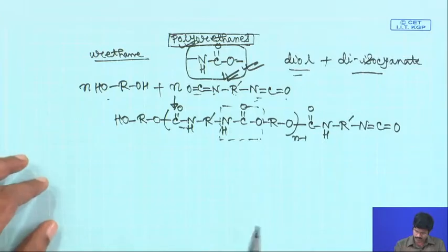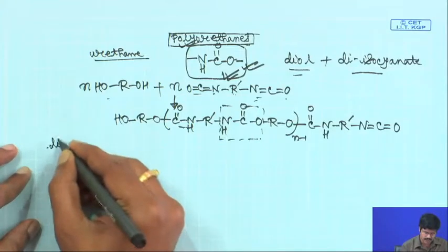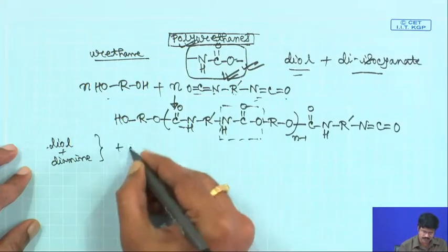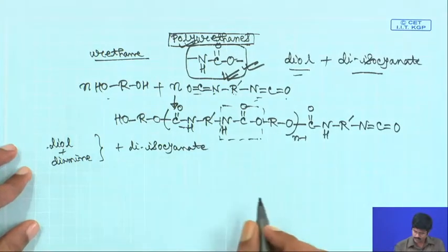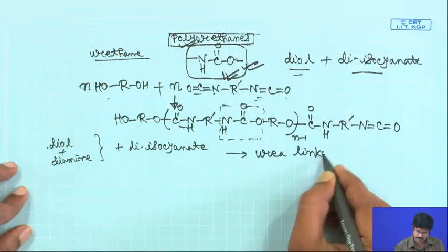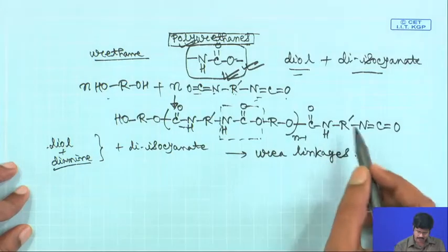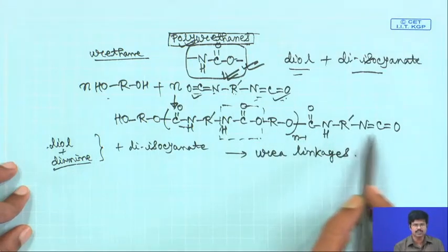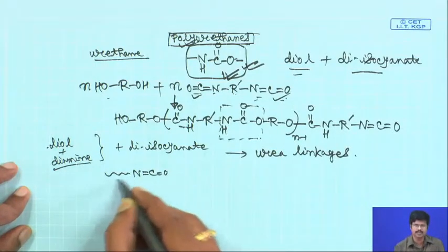In actuality, during polyurethane synthesis a diamine is also present in the system. So basically you have a mixture of diol and a diamine that is reacted with your diisocyanate. What will happen is that you will also have urea linkages in your polyurethanes. There will be polymer chains which will end with isocyanate linkage.